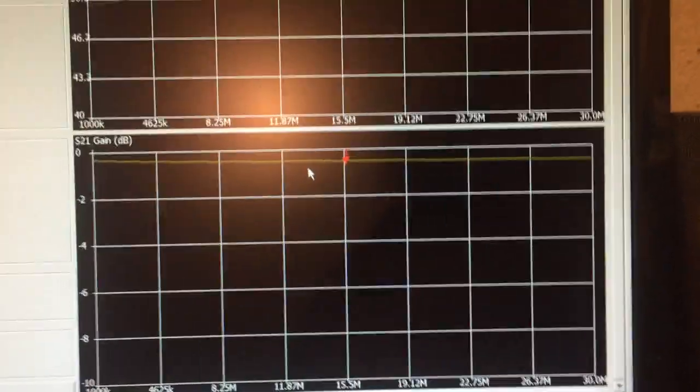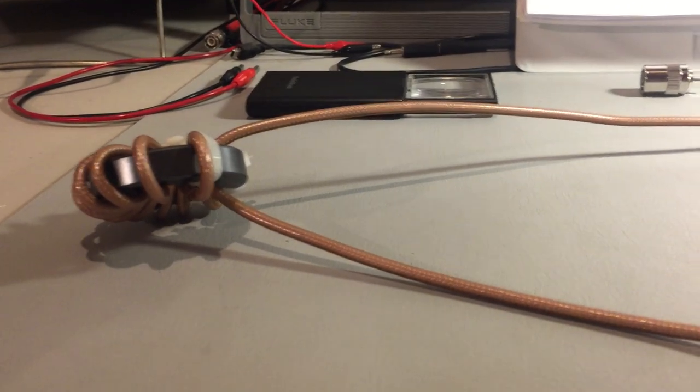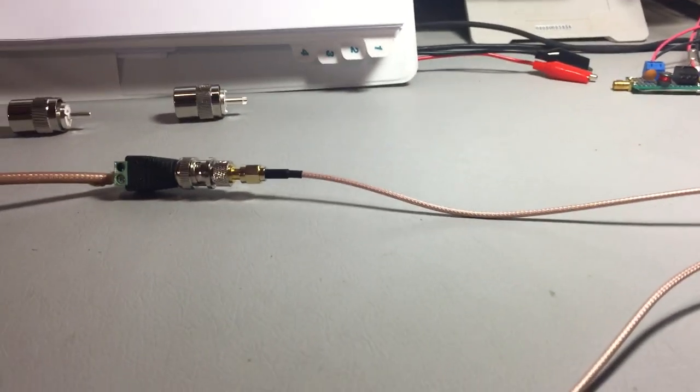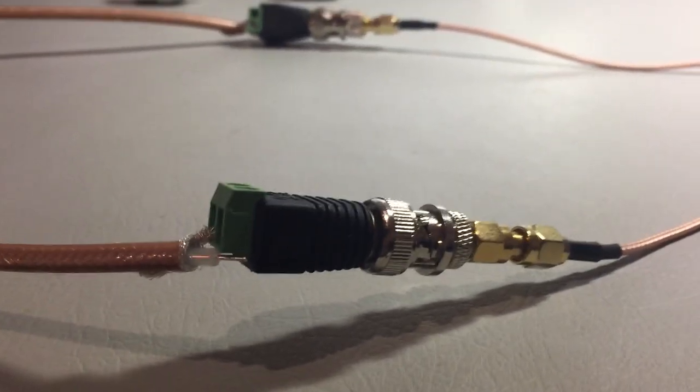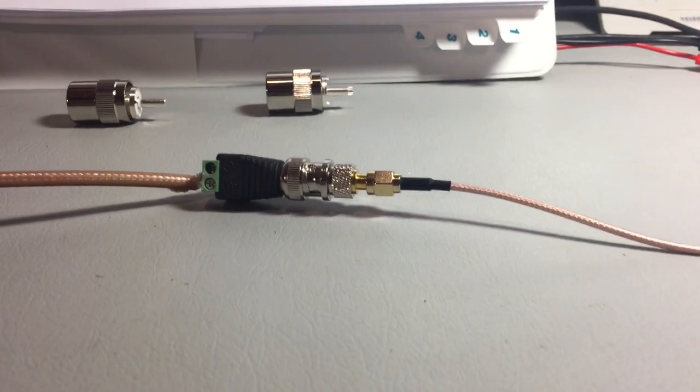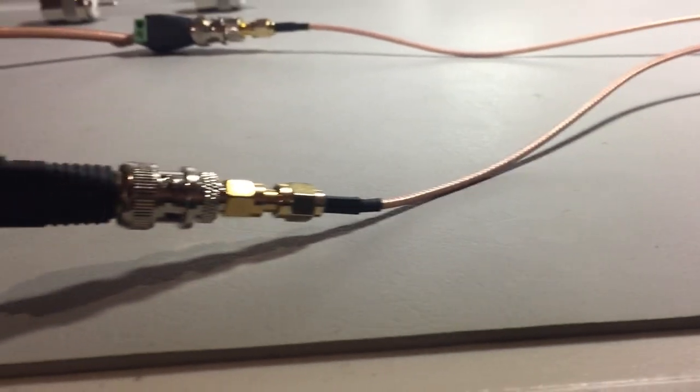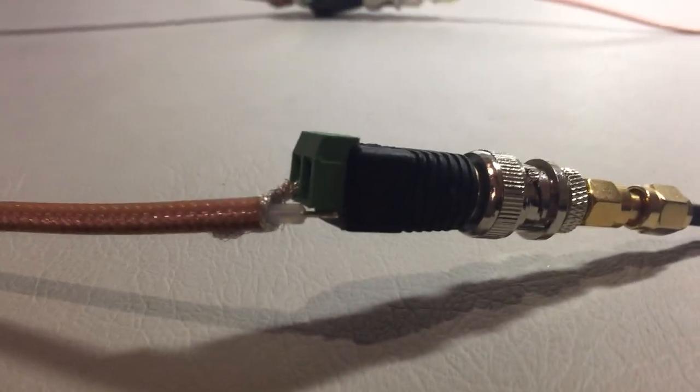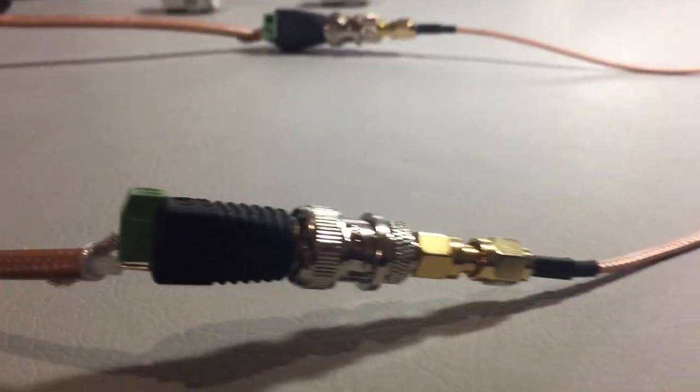Now we're going to look at the shielding and see the difference. I switched the polarity on the coax cable, that's why I'm using these type of connectors. Now I'm using the coax shielding as the center conductor so we can measure the SWR, impedance, and gain for the shielding. Let's go to the software again.